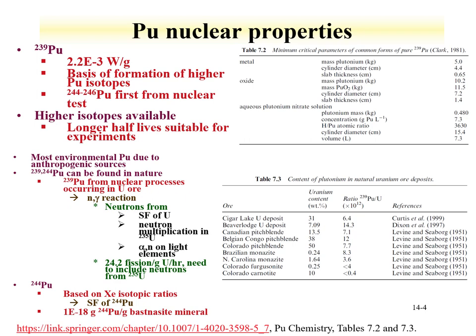There's also a natural component of plutonium in the environment, found in ores containing a lot of uranium. Uranium has a very small spontaneous fission half-life, so it can emit neutrons via spontaneous fission. In ores with large amounts of uranium — such as the Cigar Lake uranium deposits — there's a probability of these neutrons capturing onto uranium-238 and creating plutonium-239. In some of these materials, the ratio of plutonium-239 to uranium has been evaluated and is on the order of 6.4 × 10⁻¹², indicating it can be found in nature but at extremely low concentrations.